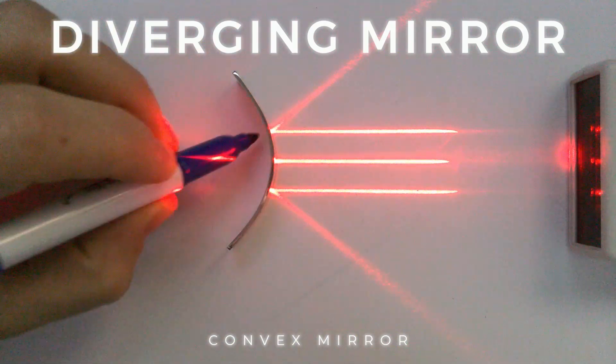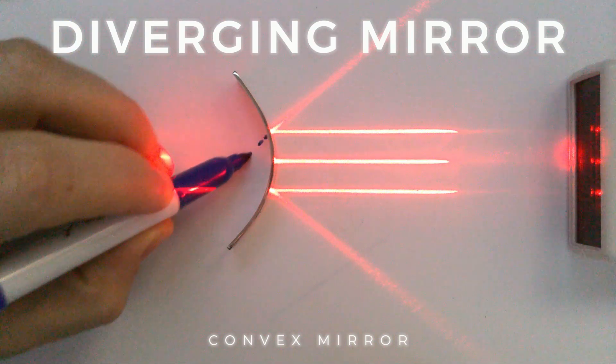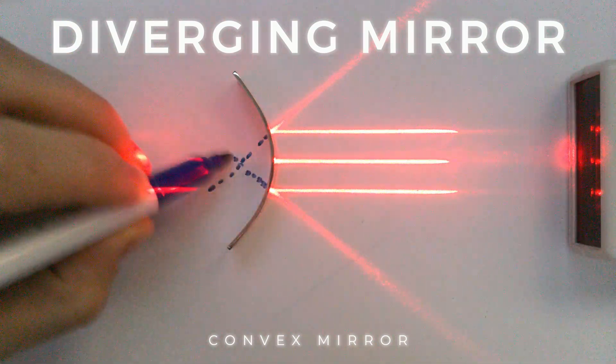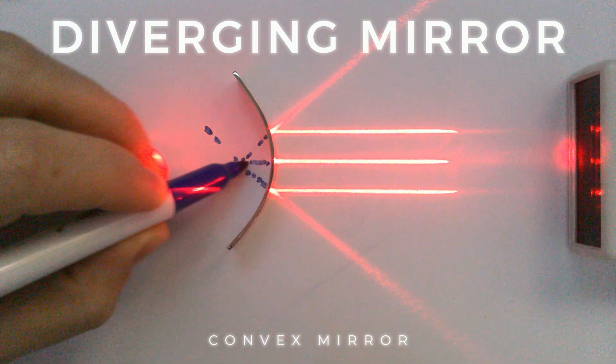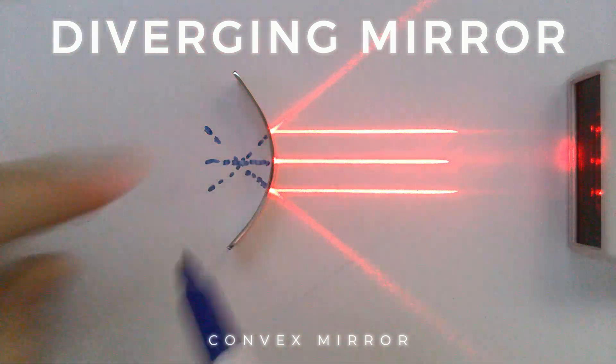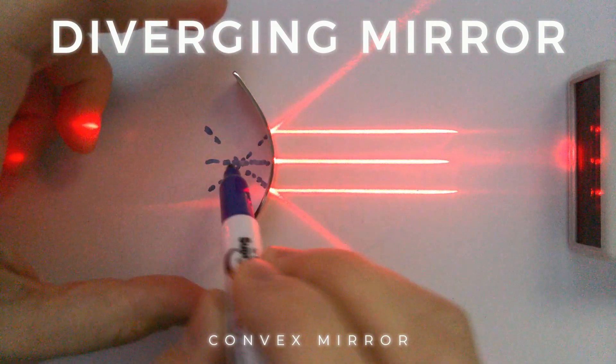A diverging or another name for this is a convex mirror. But if we take a look and follow the rays on the other side, what we'll find is, and it's going to be a few dots here just to show it, if I continue the rays, that they do meet on the other side or they meet behind the mirror.